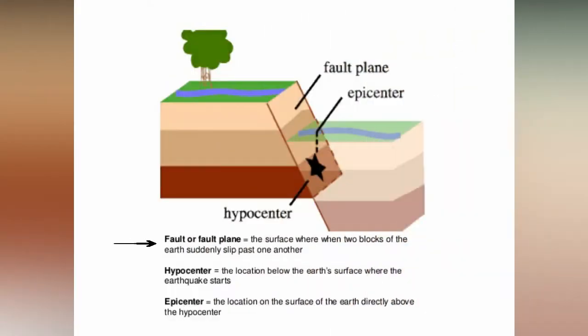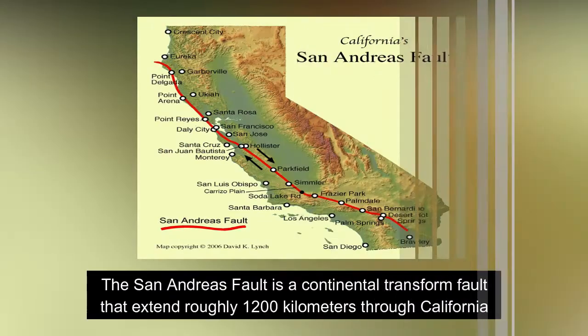The surface where they slip is called the fault or fault plate. The location below the Earth's surface where the earthquake starts is called the hypocenter, and the location directly above it on the surface of the Earth is called the epicenter.